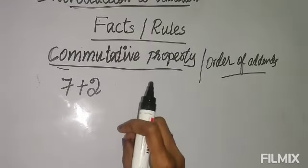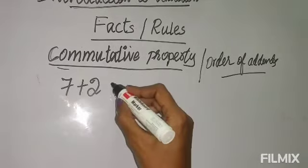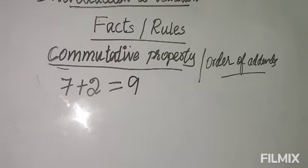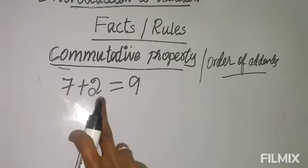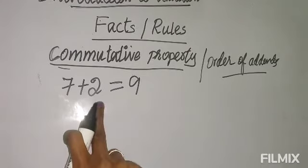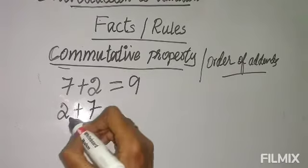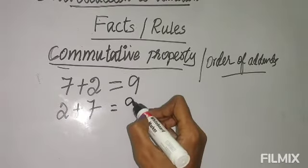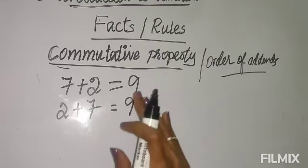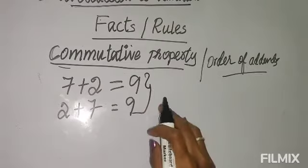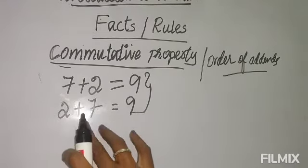Let me give a simple example. Here two numbers: 7 plus 2 gives 9. Seven is first and two is second - that is the order. Now let's change the order of the addends: let two come first and seven come second. So 2 plus 7 also gives 9. This is the commutative property: when you change the order of the addends, the sum doesn't change.